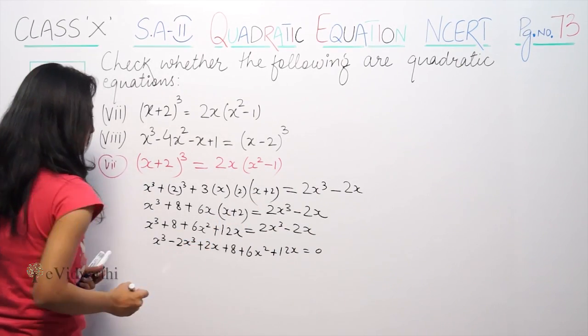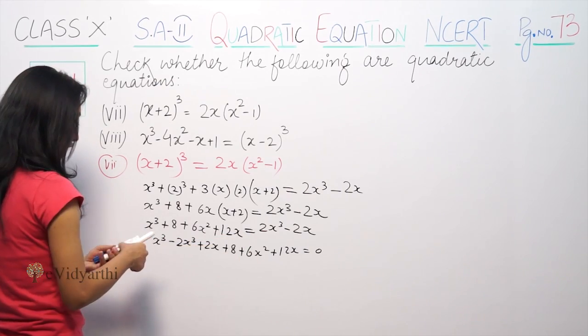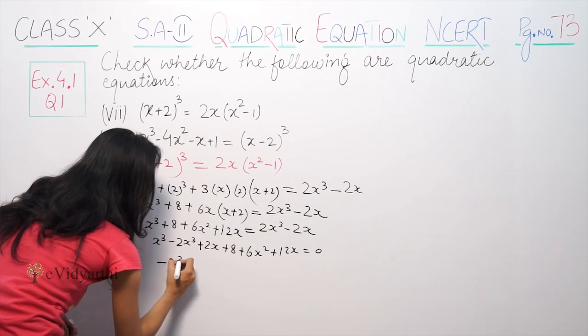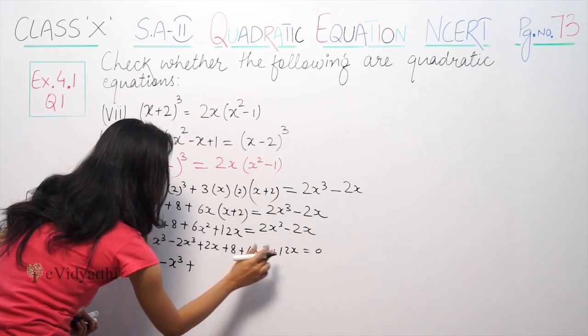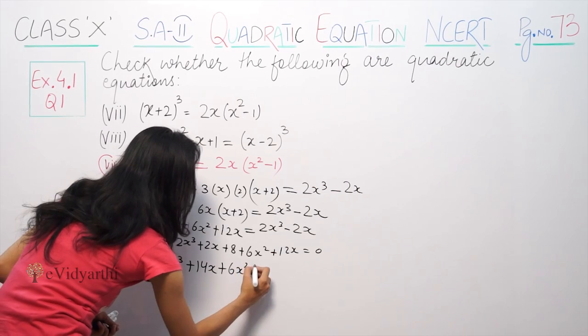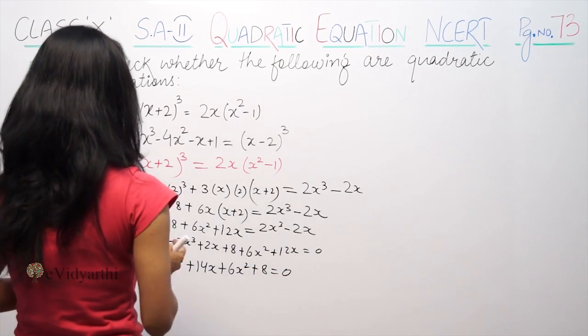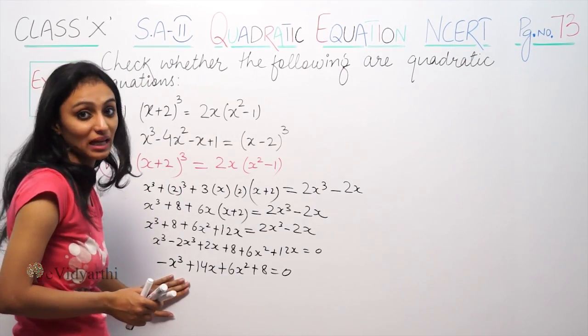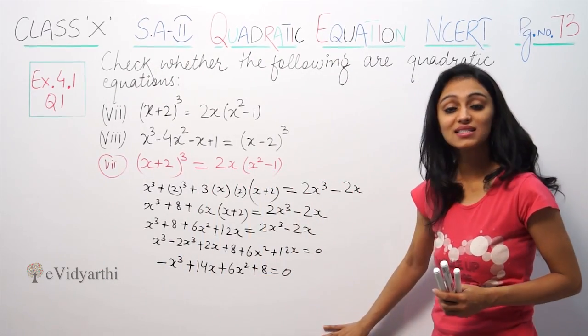So x³-2x³-2x+8+6x²+12x is equal to 0. So here, x³-2x³ gives -x³, -2x+12x is 10x, plus 6x²+8 is equal to 0. So here, if you can see, square term is there but cube term is also there. That means the polynomial is not quadratic. This is cubic.